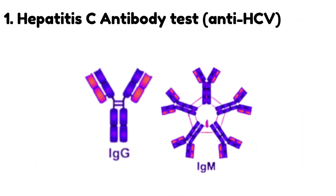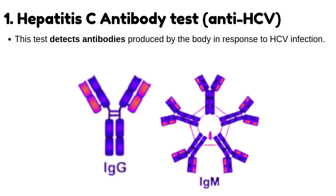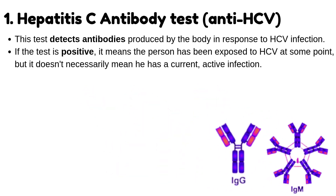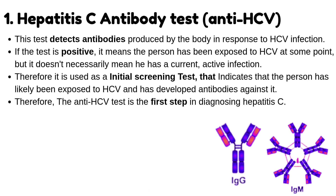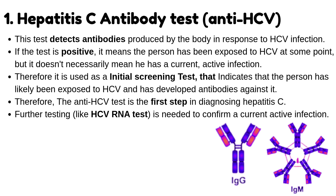Number 1: Hepatitis C Antibody Test — Anti-HCV. This test detects antibodies produced by the body in response to Hepatitis C infection. If the test is positive, it means the person has been exposed to Hepatitis C at some point, but it doesn't necessarily mean they have a current, active infection. Therefore, it is used as an initial screening test that indicates the person has likely been exposed to HCV and has developed antibodies against it. The anti-HCV test is the first step in diagnosing Hepatitis C; further testing, like the HCV RNA test, is needed to confirm a current active infection.